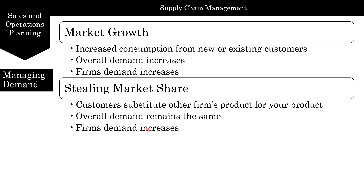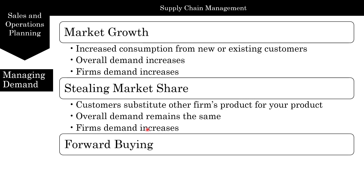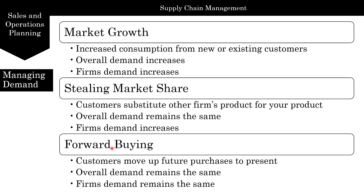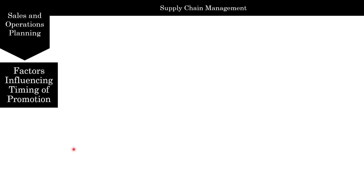Stealing market share is a win-loss situation where you're competing very fiercely. The third aspect has nothing to do with external forces — this is forward buying. Customers who plan to buy a few months later move up their purchases to the present, so overall demand remains the same. For example, if you have a flexible spending account with a use-it-or-lose-it policy, you might go to the doctor in December rather than January or February — that's forward buying.